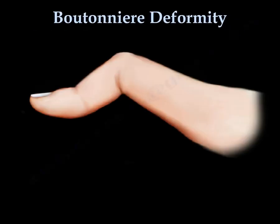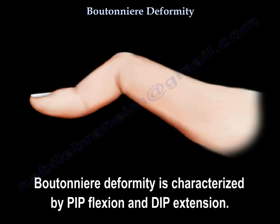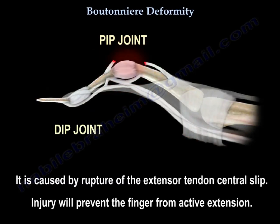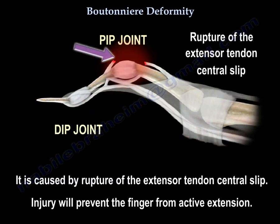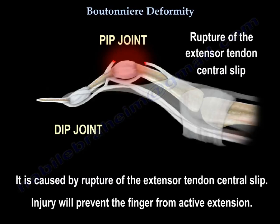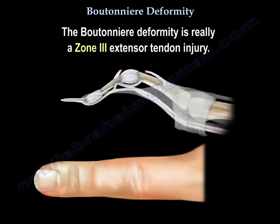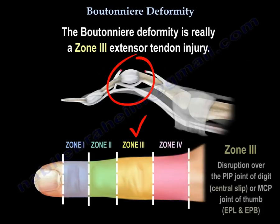Boutonniere deformity is characterized by PIP flexion and DIP extension. It is caused by a rupture of the extensor tendon central slip. An injury to the extensor tendon or the central slip will prevent the finger from active extension. Boutonniere deformity is really a zone 3 extensor tendon injury.